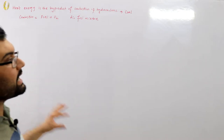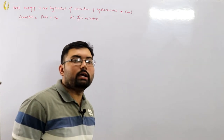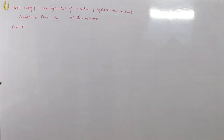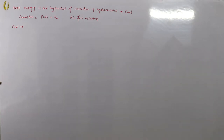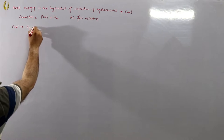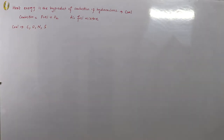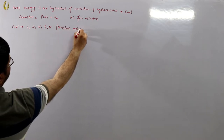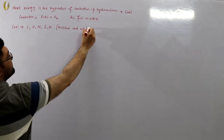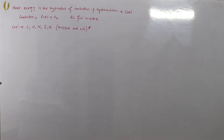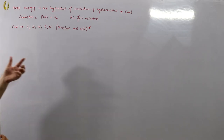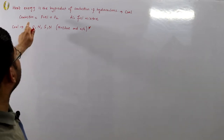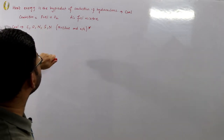Coal is not a pure form of carbon — it has impurities. Coal consists of carbon, oxygen, nitrogen, sulfur, hydrogen, moisture, and ash content. The moisture and ash content are the most important components to consider. Carbon, oxygen, nitrogen, and sulfur are also part of coal's composition, but moisture and ash are the key ones to address.